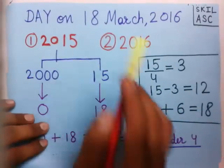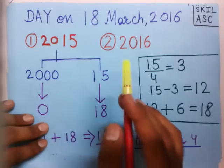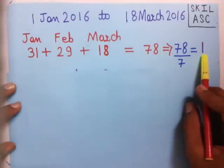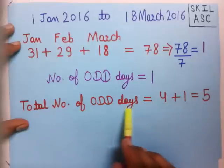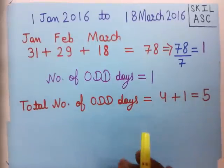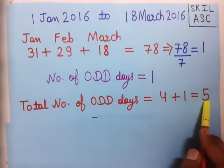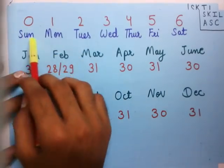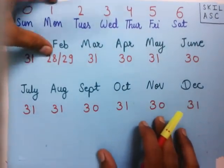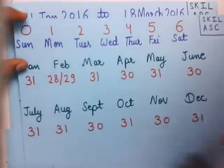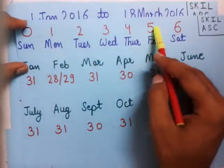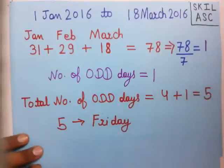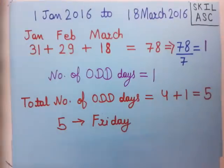Now we add the odd days from both parts: first part has 4 odd days and second part has 1 odd day, giving a total of 5 odd days. From our table, 5 odd days corresponds to Friday. So the day on 18th March 2016 is Friday.